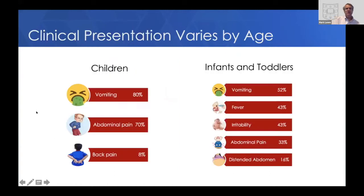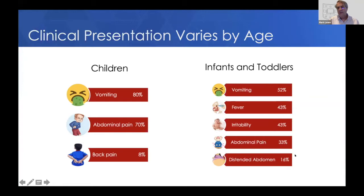The clinical presentation also varies by age. Children three and above present very much like adults — vomiting and abdominal pain are very common, and back pain is only in less than 10%. For infants and toddlers, vomiting and abdominal pain can also occur, and irritability in nonverbal kids may indicate abdominal pain. Interestingly, parents brought the child to medical attention for fever in 43% and distended abdomen in 16%, complaints not commonly seen in older children. One needs to be mindful that infants and toddlers can have acute pancreatitis and may present differently.